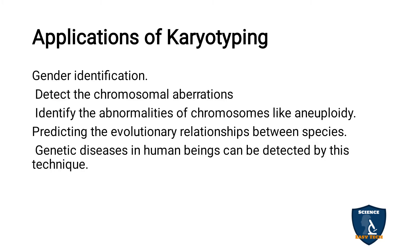Next we move on to the applications of karyotyping. The first is gender identification — determining whether a baby is male or female. In the mother's womb itself, we can find out the sex. If a male has X and Y chromosomes, karyotyping of the baby can determine male or female sex. Female sex carries double X. However, this was banned because of problems in the ratio of male and female babies — female babies detected in the zygote stage were getting aborted, so the government banned this gender identification test.